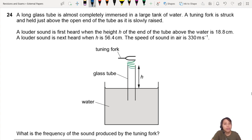A loud sound is first heard when the tube is at height H above the water, 18.8. What does this mean? A louder sound. So you will hear the sound of the tuning fork, but suddenly when you change the height, you will hear the sound become very loud. Why is that? Because a stationary wave has formed.